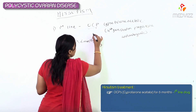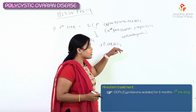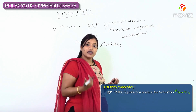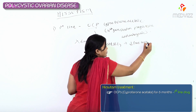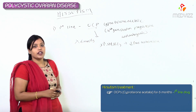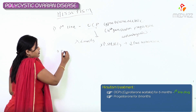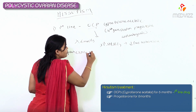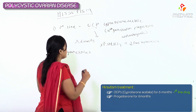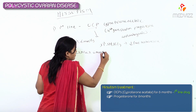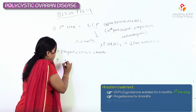Another mechanism by which OC pills help in hirsutism: they increase the levels of sex hormone binding globulin (SHBG). When SHBG is increased, free testosterone and free androgens decrease. So OC pills are the first line. The next drug we can use is progesterone — specifically cyproterone acetate — given continuously for six months.